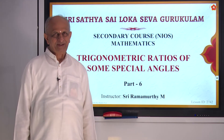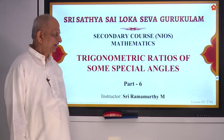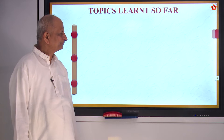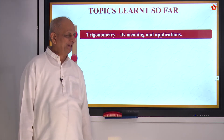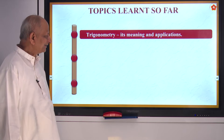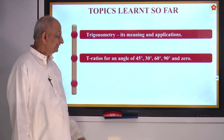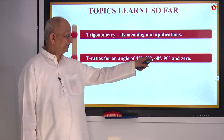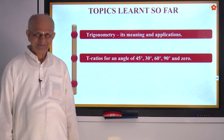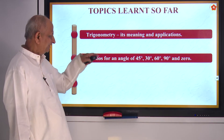The last topic in trigonometric ratios of some special angles. What are the special angles? Angles like 30 degrees, 45 degrees, 60 degrees, 90 degrees, and 0 degrees. These are all called special angles and that is what we are studying.